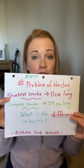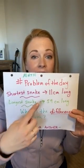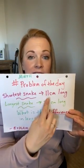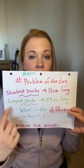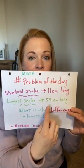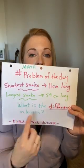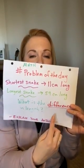Okay, you got it? Shortest snake in the reptile house is 11 centimeters. The longest one is 59 centimeters. What is the difference?